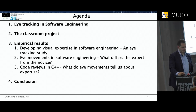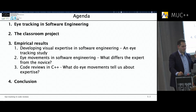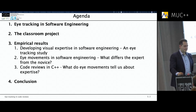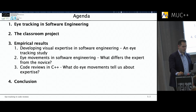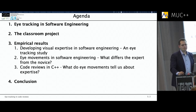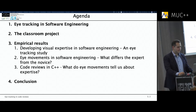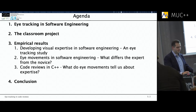In the beginning I would like to give you a short overview of how eye tracking is already used in software engineering, because there have already been a lot of publications. Then I will talk about the classroom project which Jürgen has already mentioned. Then I come to our own empirical results — results of two studies — and talk about the current C++ study which is right now going on.